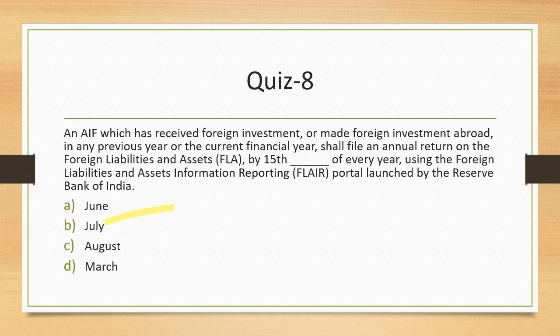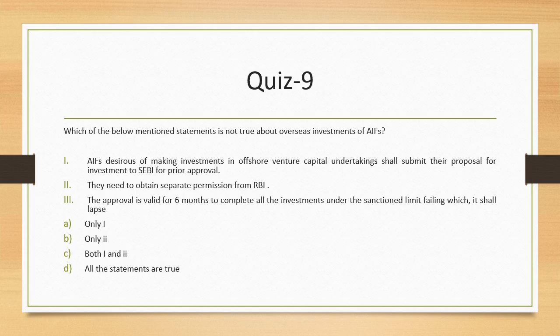Question 9: Which of the below-mentioned statements is not true about overseas investments of AIFs? Statement A: AIFs desirous of making investment in offshore venture capital undertakings shall submit their proposal to SEBI for prior approval. Statement B: They need to obtain separate permission from RBI as well. Statement C: The approval is valid for six months to complete all investments under the sanctioned limit, failing which it shall lapse. Statement B is incorrect — no separate RBI permission is needed; SEBI approval suffices. The answer is B.